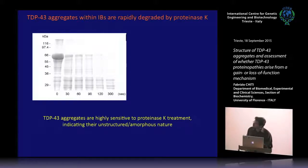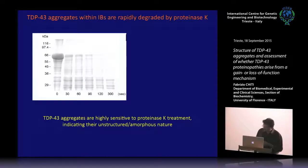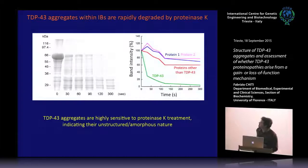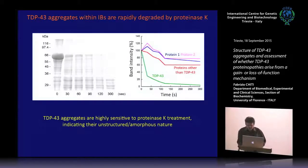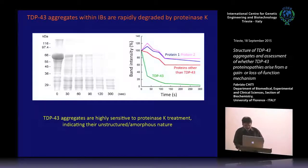TDP43 aggregates within the inclusion bodies are also highly sensitive to proteinase K. After proteinase K addition at different time points, TDP43 is hydrolyzed very quickly, whereas other proteins present in the inclusion bodies are hydrolyzed more slowly. Since proteinase K resistance is a hallmark of amyloids, such rapid degradation of TDP43 indicates it is not in an amyloid form.